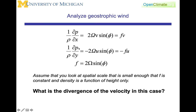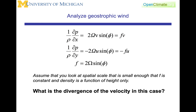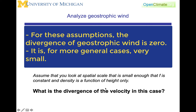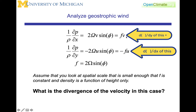Now we want to analyze the geostrophic wind. We're going to assume we're looking at a spatial scale small enough that f can be considered constant, and that density is a function of height only. Under these assumptions — consistent with our analysis of the continuity equation — the divergence of the geostrophic velocity is zero. If you take d/dy of v and d/dx of u, you get cross derivatives of opposite sign that cancel, giving divergence equal to zero.